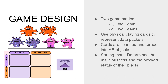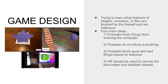In our game, we have physical playing cards to represent data packets. Based on difficulty, the cards can contain shapes, shapes and colors, monsters, or files — as shown in the slides. Those cards are scanned and turned into AR objects. There is a sorting mat which determines whether objects will be malicious or blocked. The rules and policies used in the sorting mat are pre-calculated before each iteration.